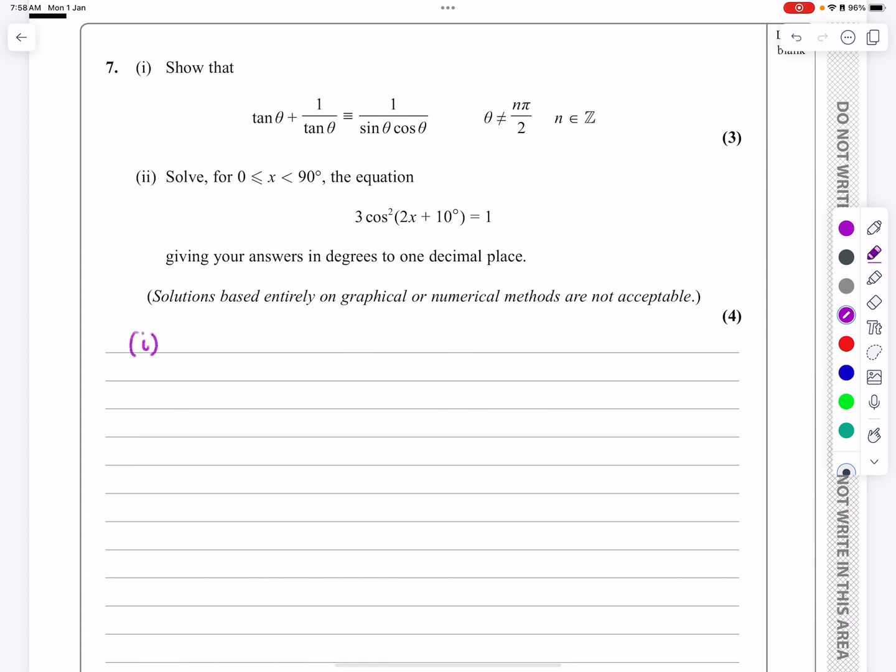Let's have a look at part 1. Part 1 is asking me to show that tan θ plus 1 over tan θ is identical to 1 over sin θ cos θ. What we normally need to do with these questions is work out, am I going to start with the left-hand side and try and make it equal to the right-hand side, or am I going to do vice versa and start with this side and try and make it equal to that side?